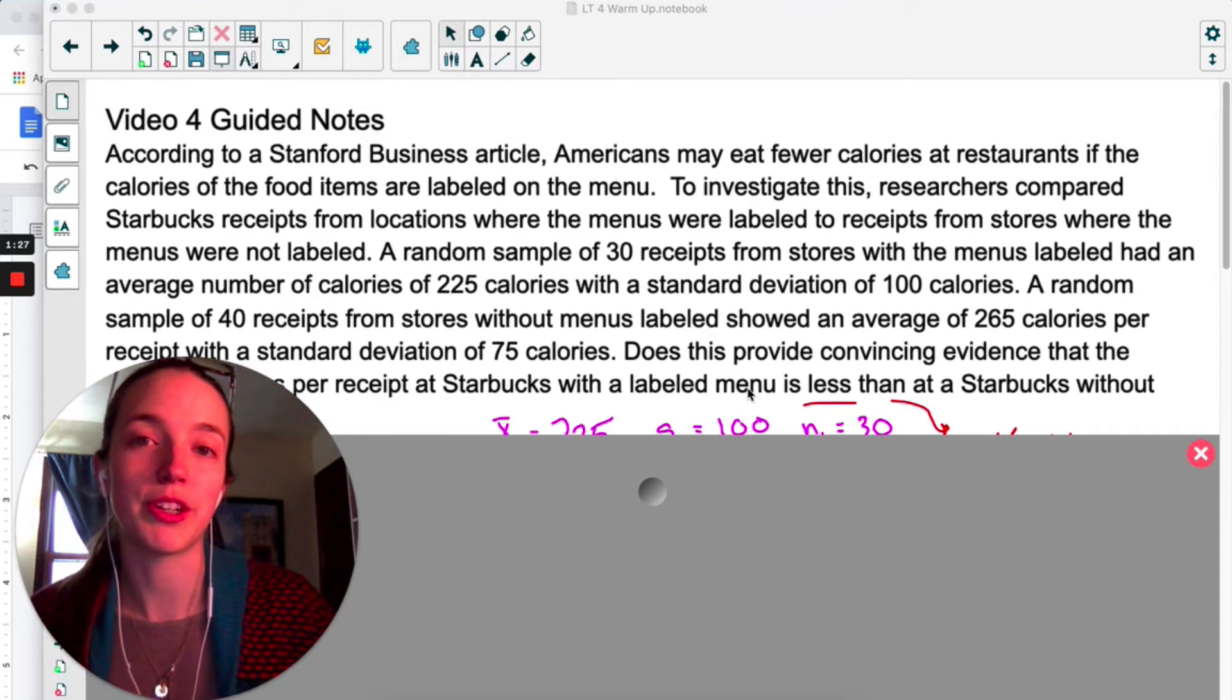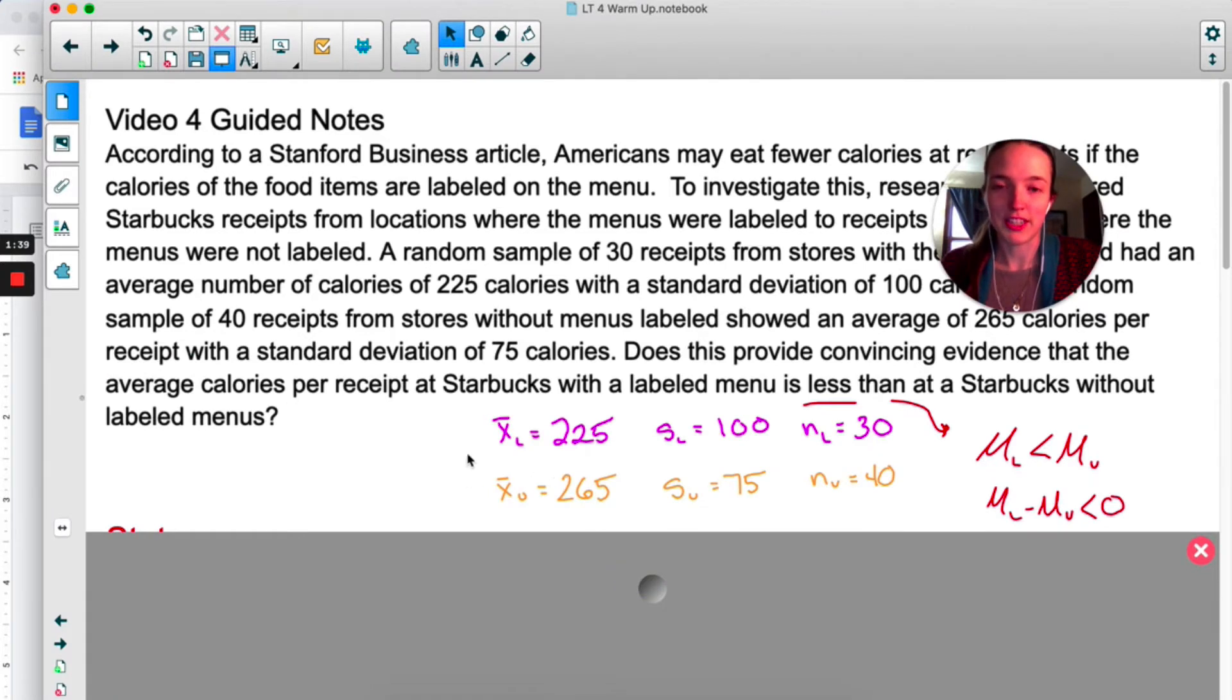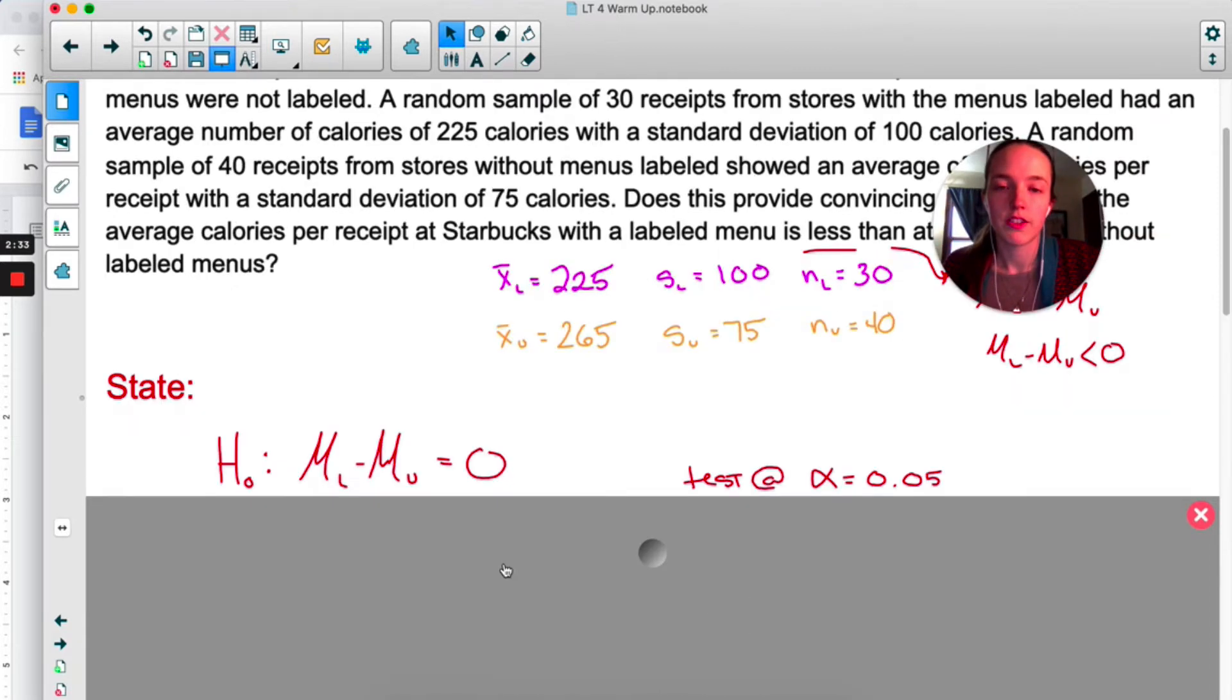I started by just jotting some things down. I don't like hunting through the problem to find all the information, so I just wrote them down here. They're asking us if the mean number of calories with the labeled menu is less than the mean number of calories with the unlabeled menu. So I wrote that out here and then I translated that into a difference. I moved μ_u, so we're wondering if the difference is less than zero or negative.